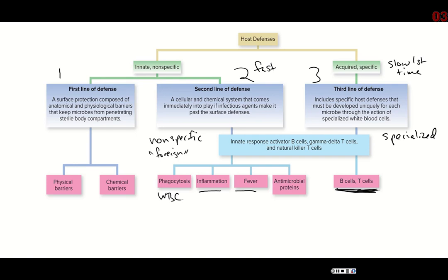They're specialized, and after they've learned what the pathogen looks like, they will launch an attack and help you recover. Once you recover, they can form memory cells. Memory cells often last a really long time — sometimes lifelong. They remember what the pathogen looked like so that if you're infected a second time, they are really fast. They can actually defeat the pathogen so fast that you never develop symptoms. Vaccination helps promote these memory cells so that you never get sick.